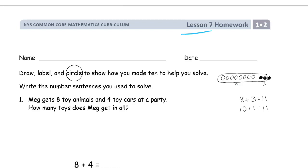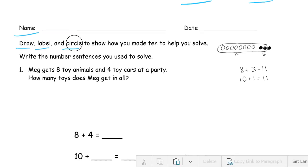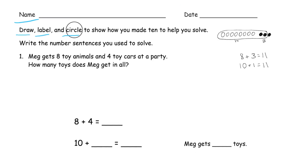Welcome to the homework for Lesson 7. This is first grade module 2. Get your name on there first and we're going to draw. These are all word problems here. We're going to draw first, label our picture, and circle to show how we make 10 to solve. Here's an example of drawing this one. This is sum to 11. It's 8 plus 3. It's labeled and then 10 are circled to make it a 10 plus 1. We're going to write out the number sentences that we used to solve it. They're already kind of written out for us so we just have to finish them.